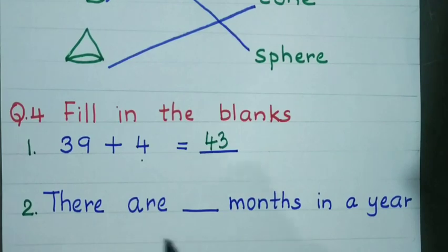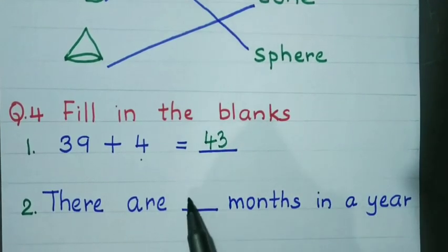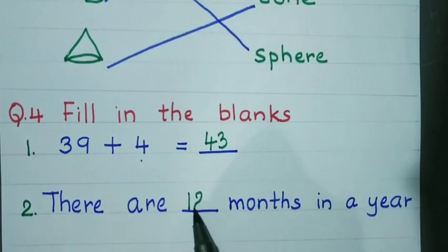There are blank months in a year. We know there are 12 months in a year.